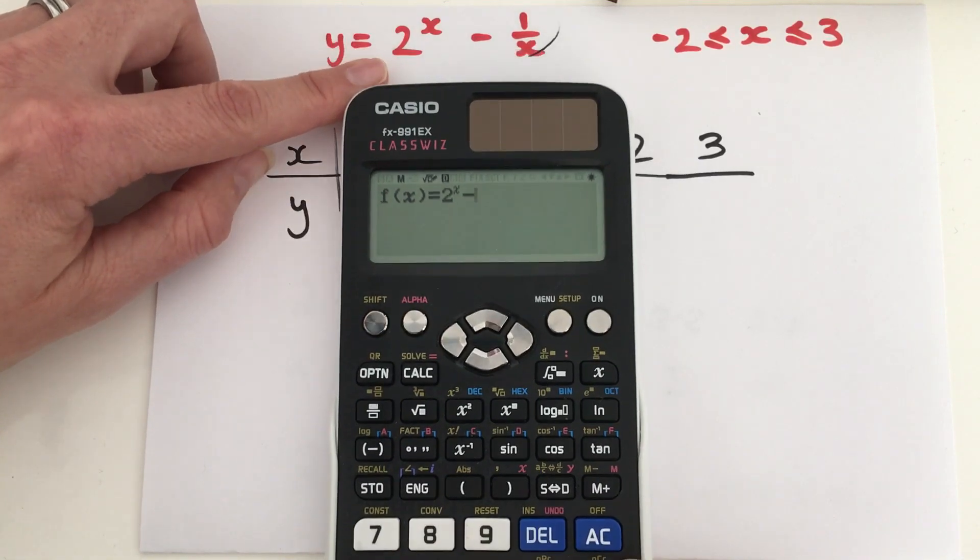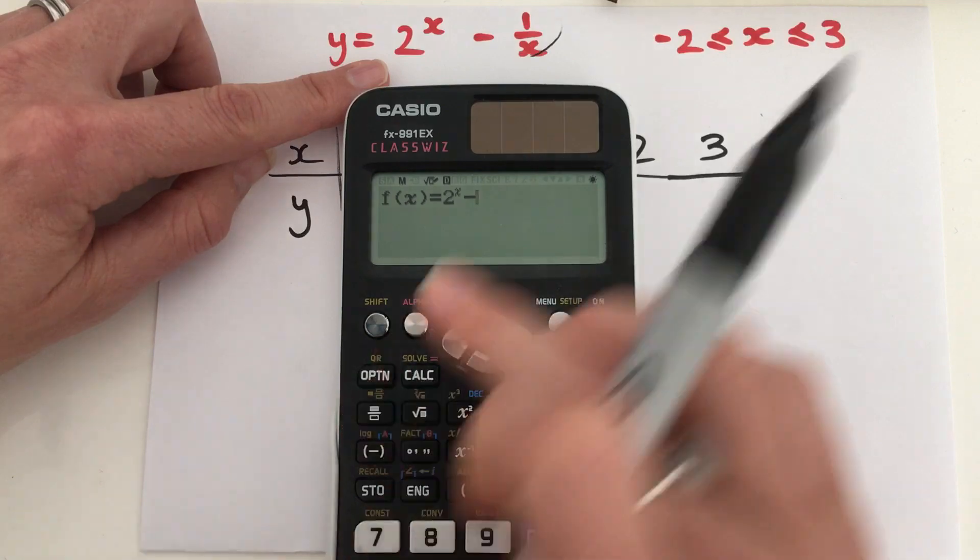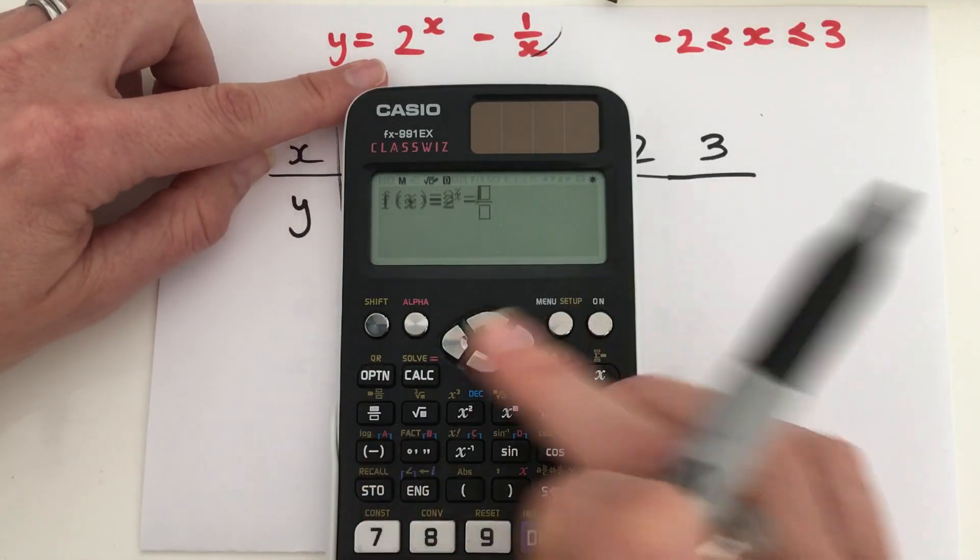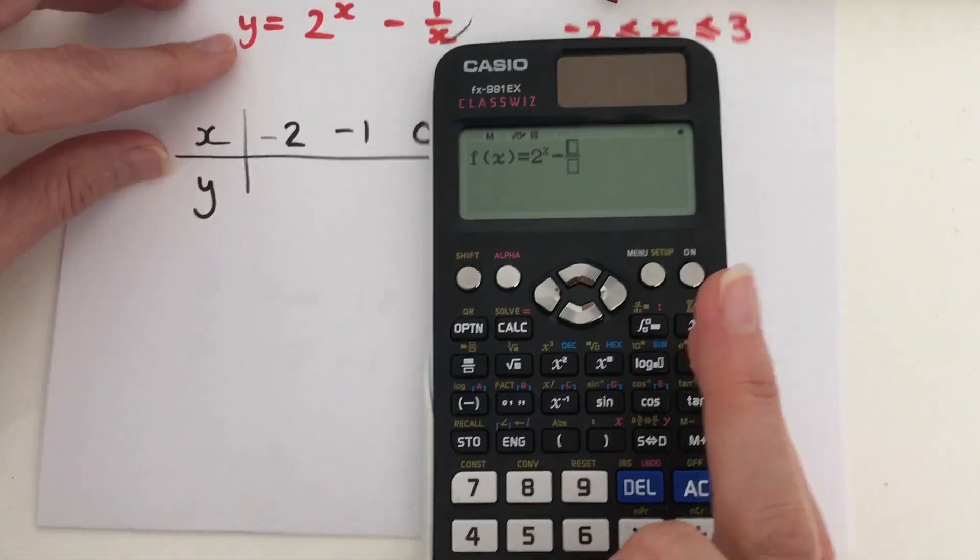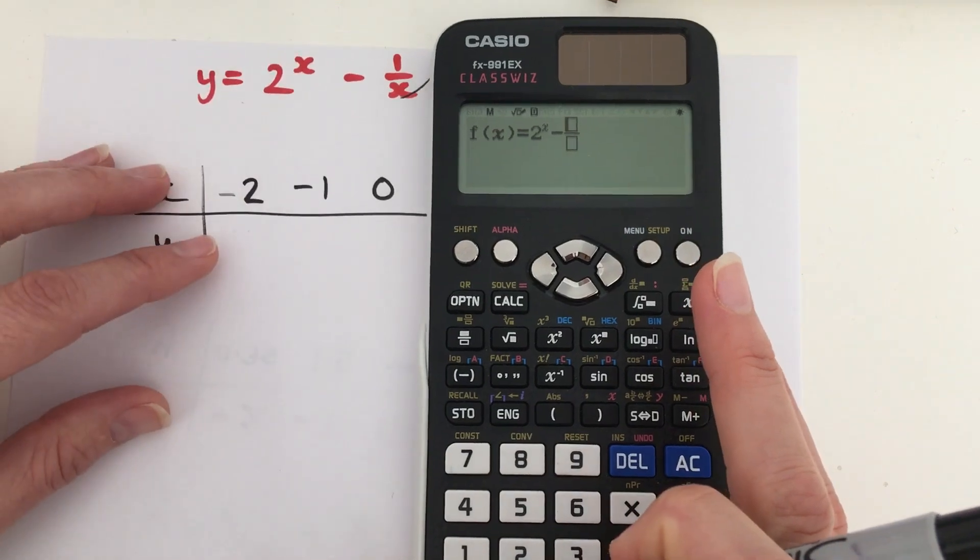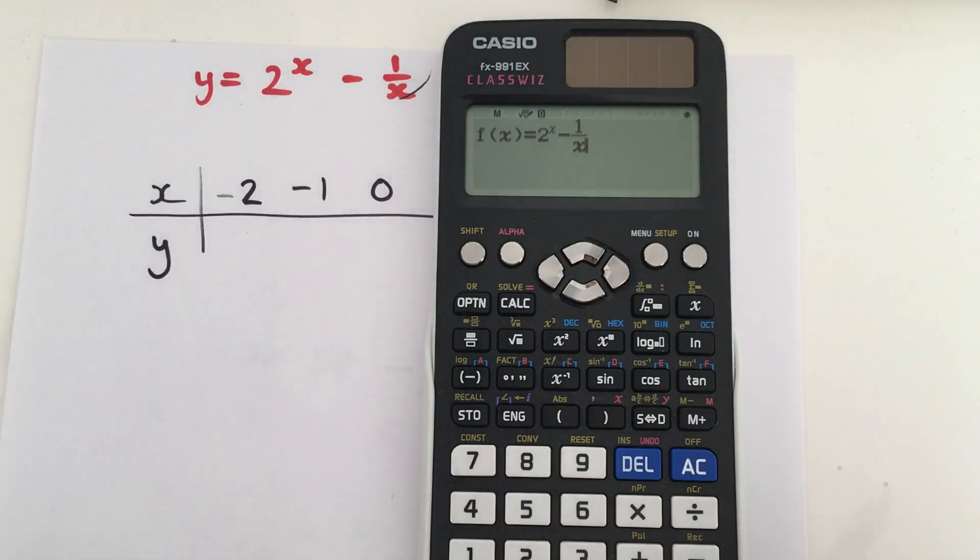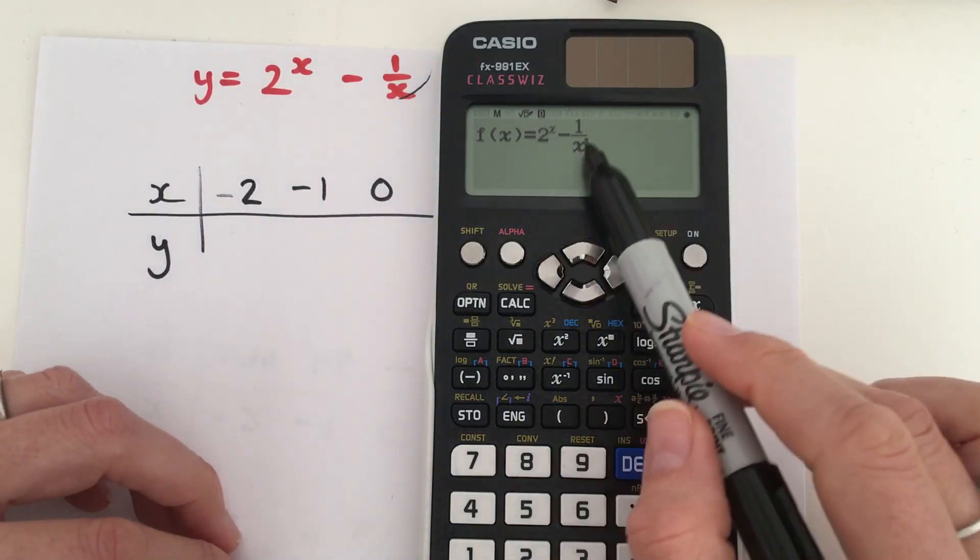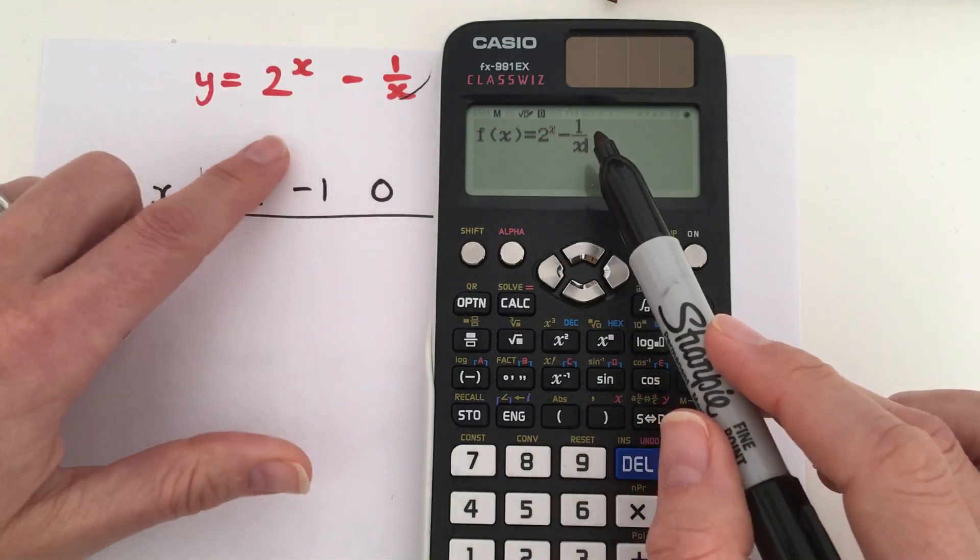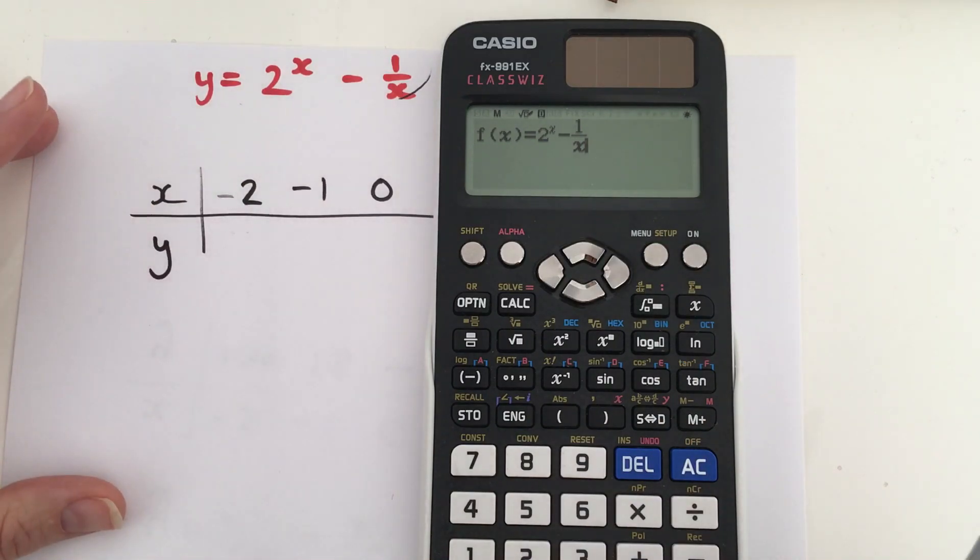And then we're going to subtract from that, we need a fraction. So, press the fraction key, and then we're going to subtract from that, 1 arrow down over x. So we've got our equation that we had originally in our calculator. And then we're going to press equals.